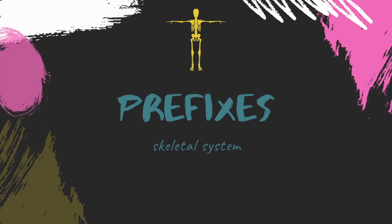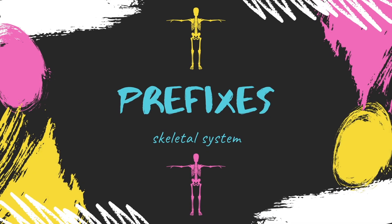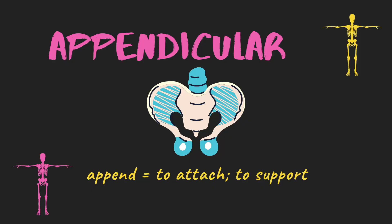We're going to start with prefixes — the start of a word. Our first one is 'append', as in the appendicular skeleton. Append simply means to attach or support. So the appendicular skeleton is the part of your skeleton that attaches to the central part — your limbs, clavicle, scapula, etc. That long word 'appendicular' is simply built from the fact that append means to attach or support. That's the prefix of the word.